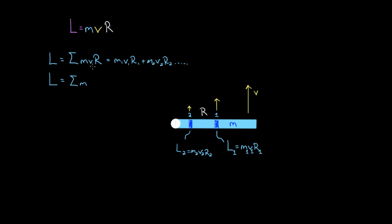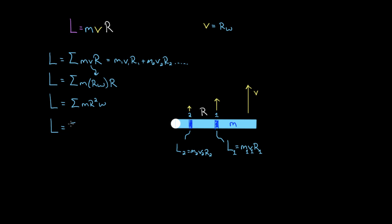Making that substitution, L = Σ(M · Rω · R) = Σ(MR²ω). Since ω is the same for every single mass on the rod, we can factor it out of the summation, giving L = Σ(MR²) · ω. You might not be impressed yet — there's still an infinite sum inside — but you don't have to evaluate it term by term.